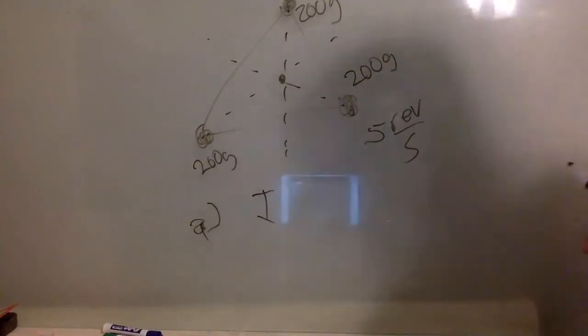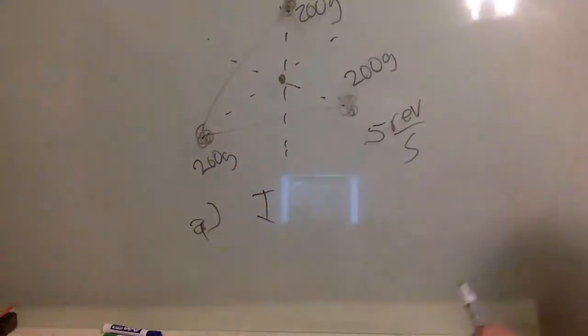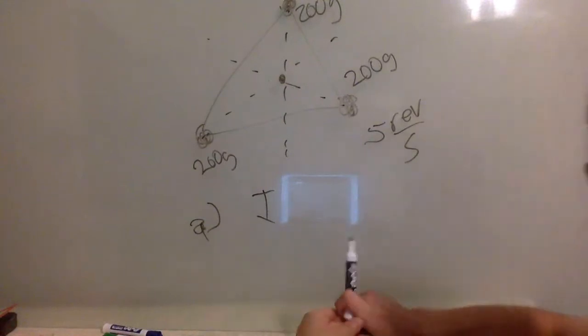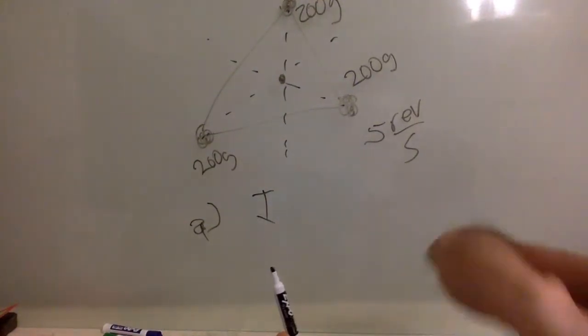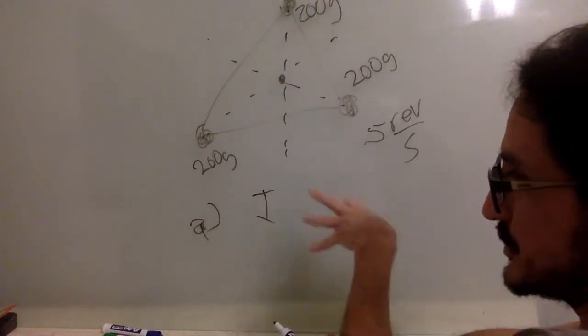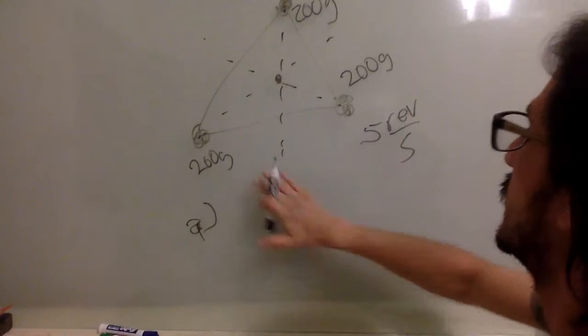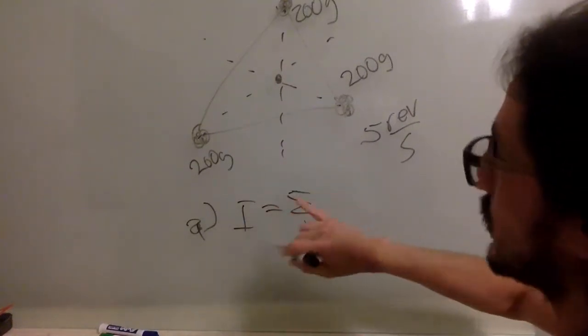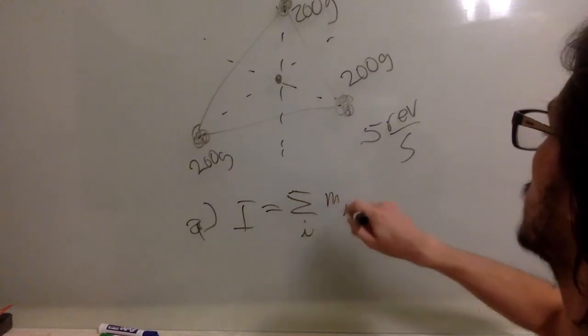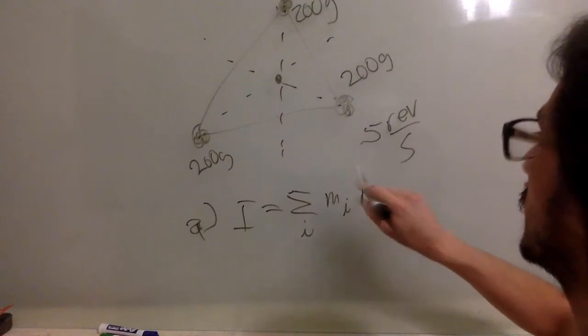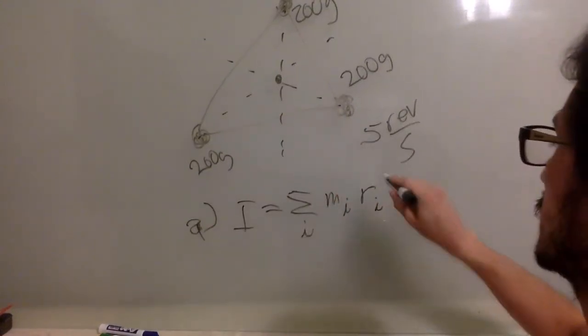So the moment of inertia is almost like the center of mass, but instead of being an average, it's just a sum. So the sum of all the particles, the mass of that particular particle and the distance from the center of rotation squared.